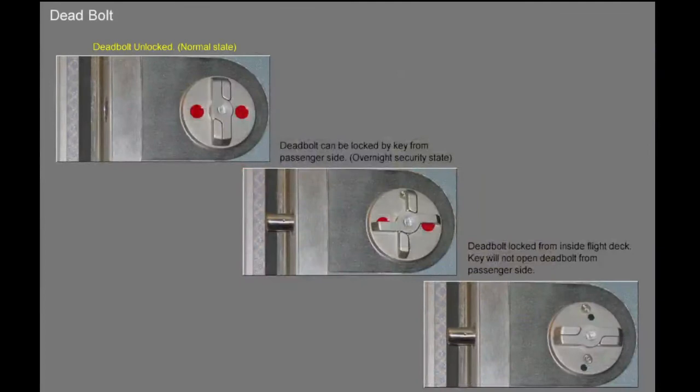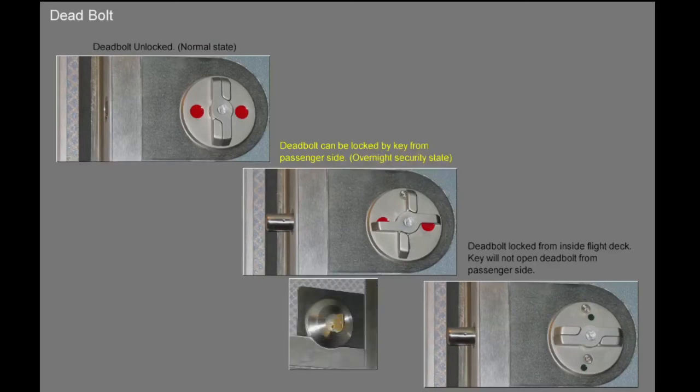The deadbolt is unlocked in the vertical position. Rotating half of the lever 90 degrees counter-clockwise locks the deadbolt and secures the door. You can also lock the deadbolt with the key from the passenger side. This provides overnight security.